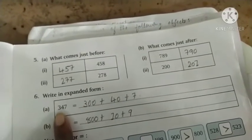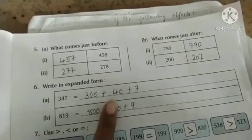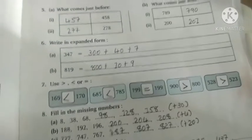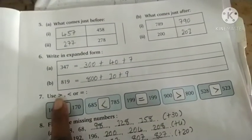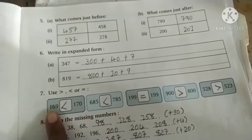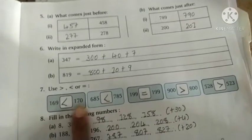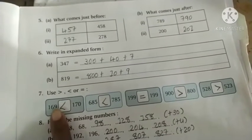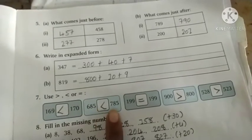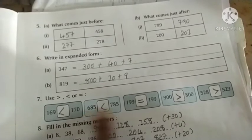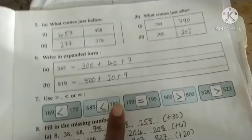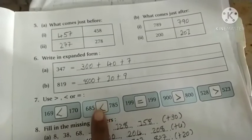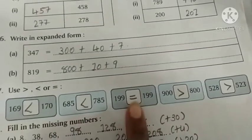Question 7, use greater than, less than, or equal to signs. You know greater sign has big corners open toward the bigger number. For 169 and 170, the bigger is 170, so 169 is less than 170. For 685 and 785, first digit 6 and 7, so 7 is bigger, making it less than sign. For 199 and 199, both are equal.